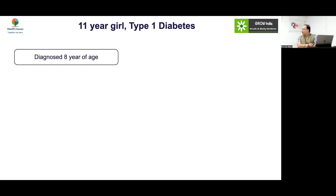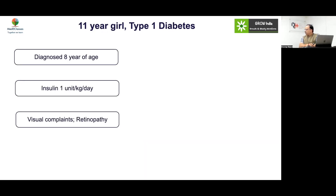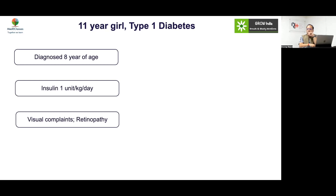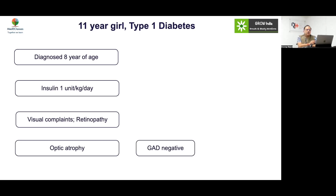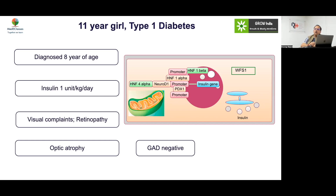Case 12: An 11-year-old girl diagnosed with type 1 diabetes at 8 years, on insulin 1 unit/kg, presenting with visual complaint reported as retinopathy. Could this be diabetic retinopathy? Extremely unlikely — in the pre-pubertal age group, chances of diabetic complications are much less. There was optic atrophy, so you should do genetic testing. If you have a non-autoimmune type of diabetes with early-onset apparent retinopathy, think of Wolfram syndrome.